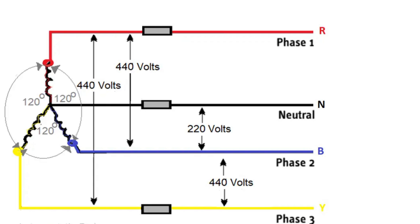In the star connection, if we connect three phases at a point, that point is called the neutral point. If we measure with a multimeter between the neutral and any of the phases, that is called the phase voltage. The value of the phase voltage measured between the neutral and any phase will be approximately 220 volts.